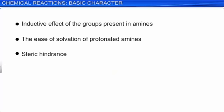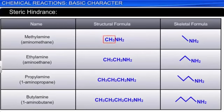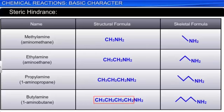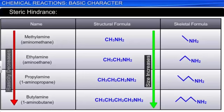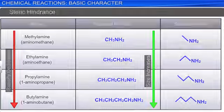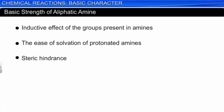Another important factor affecting the order of basicity is steric hindrance. If the size of the alkyl group is small, like the methyl group, there is no steric hindrance to hydrogen bonding in the aqueous phase. If the size of the alkyl group is larger than the methyl group, then there is steric hindrance to hydrogen bonding in the aqueous phase. As the size of the alkyl group increases, the steric hindrance to hydrogen bonding increases and the basicity decreases. Thus, the relative basic strength of primary, secondary, and tertiary aliphatic amines is due to the combination of inductive effect, solvation, and steric hindrance.